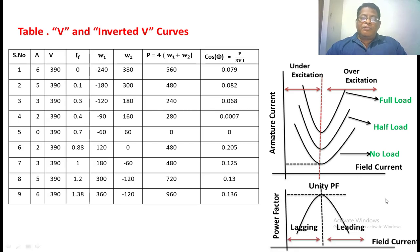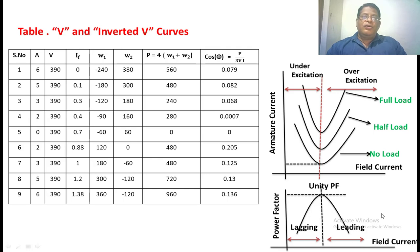This curve is drawn between field current on the X-axis and power factor on the Y-axis. Since we know both power factor values and field current values, we plot field current on the X-axis and power factor on the Y-axis. This gives an inverted V-curve shape. To summarize: V-curves are curves drawn between field current and armature current, while inverted V-curves are curves drawn between field current and power factor of a synchronous motor.